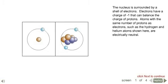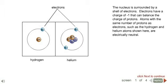The nucleus is surrounded by a shell of electrons. Electrons have a charge of negative 1 that can balance the charge of protons. Atoms with the same number of protons as electrons, such as the hydrogen and helium atoms shown here, are electrically neutral.